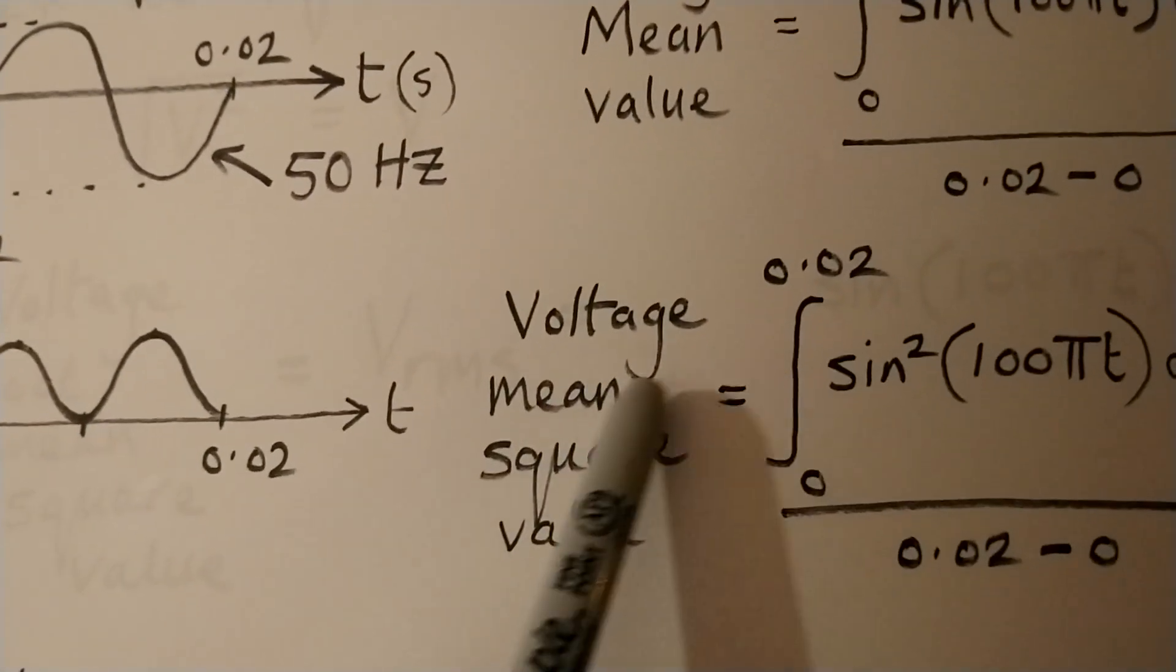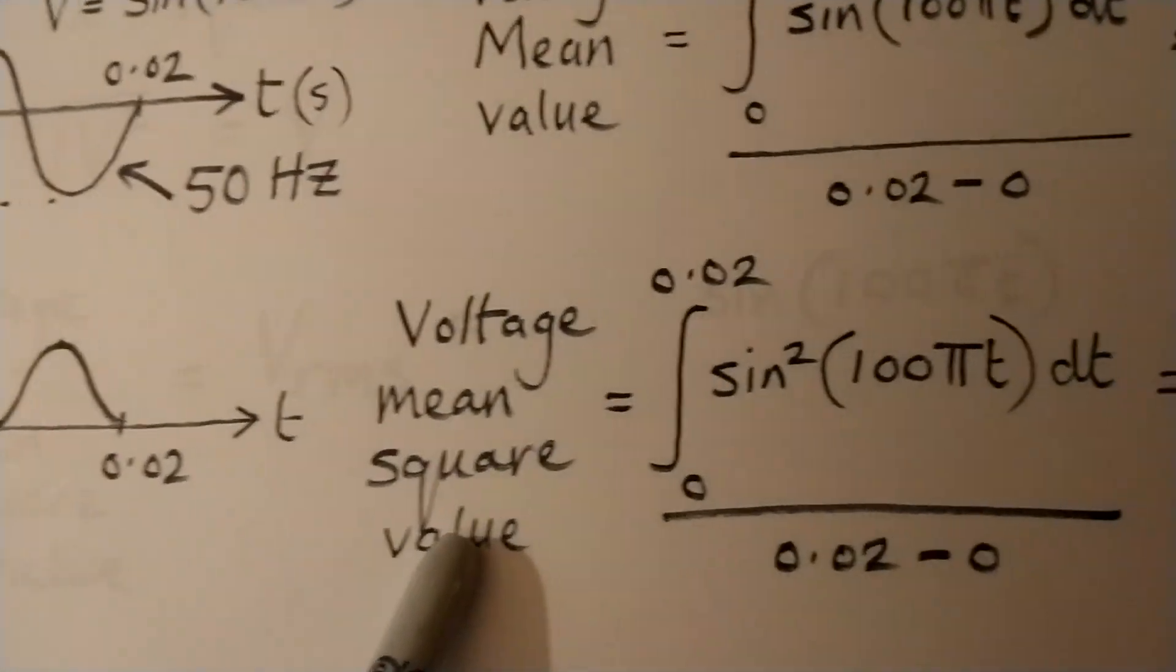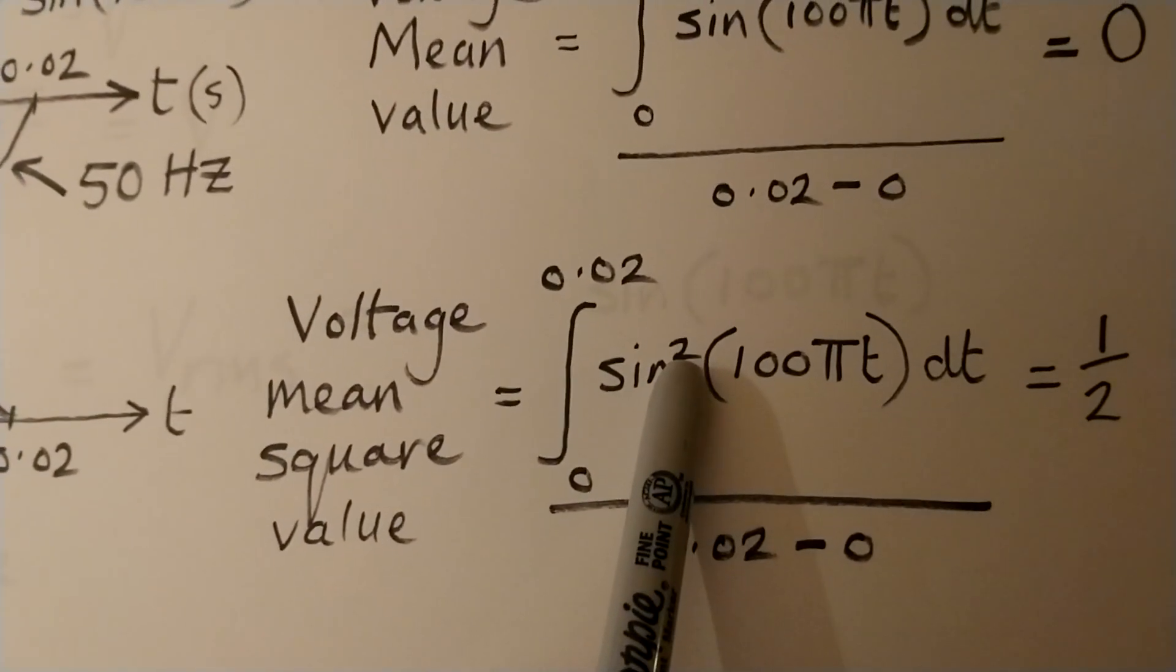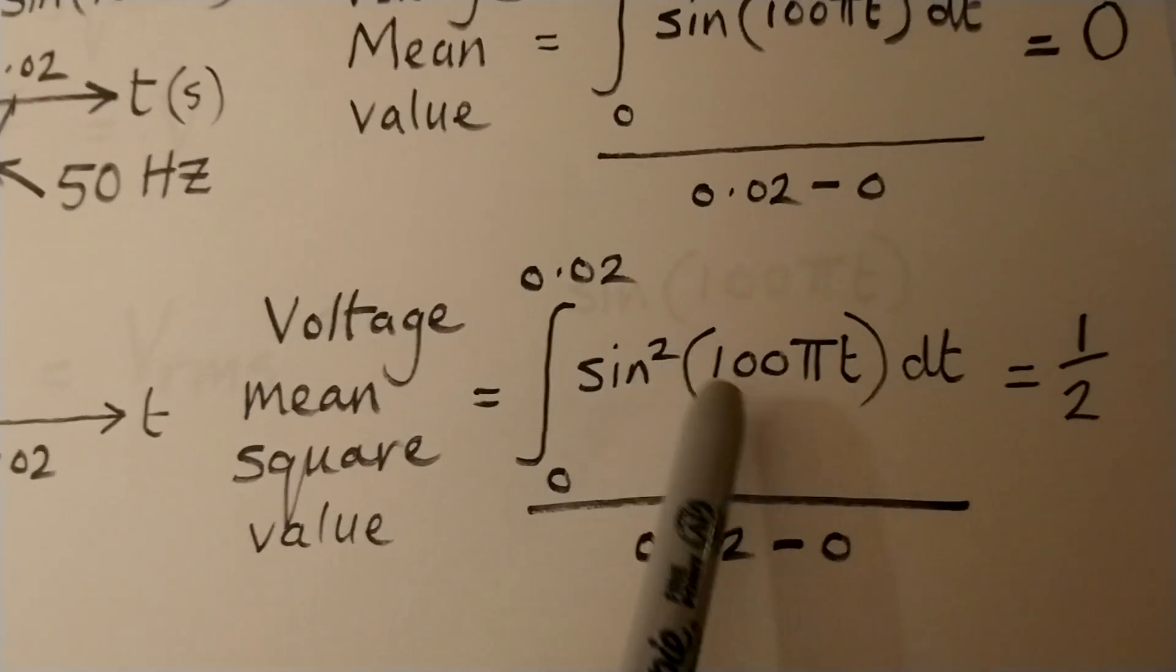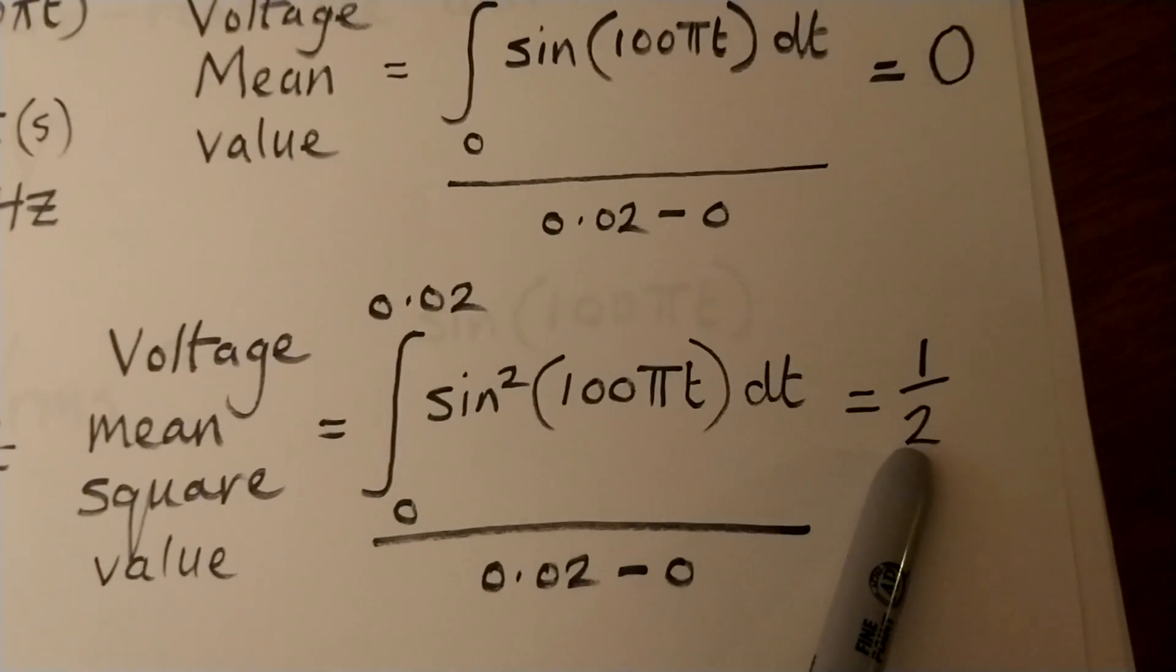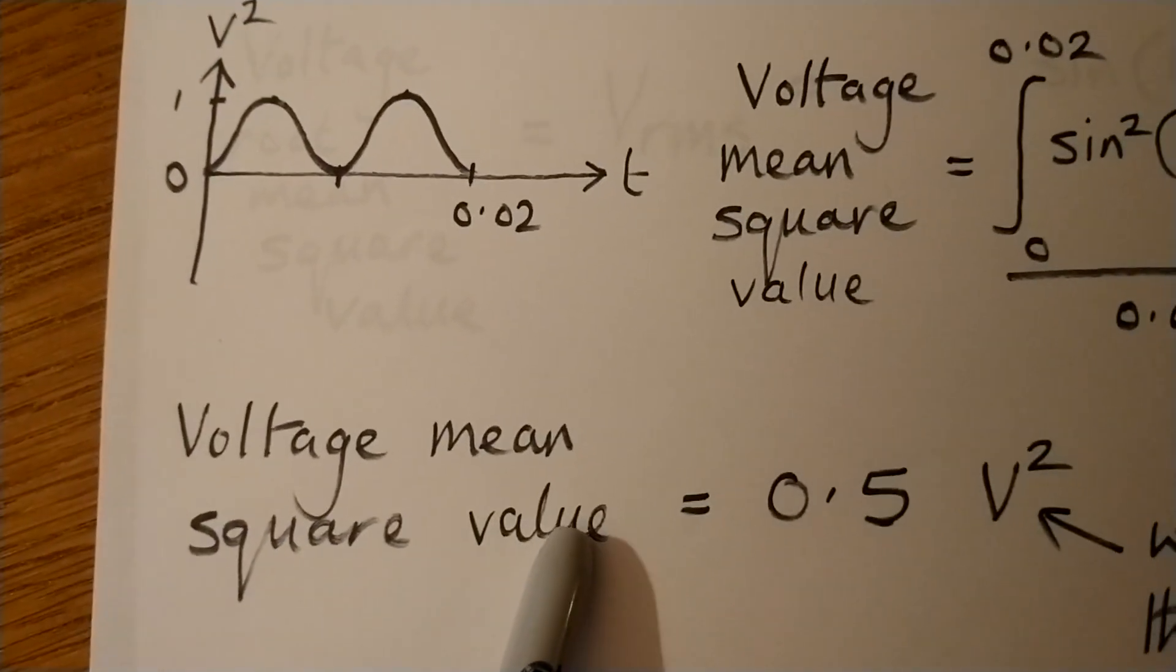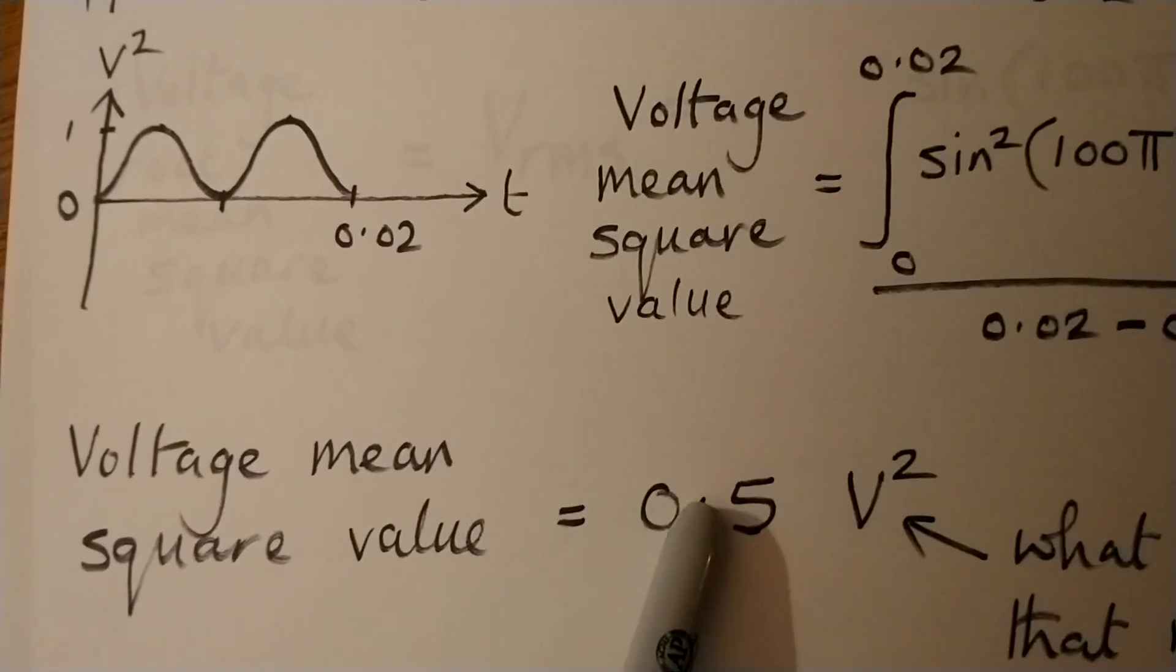And if we work out the voltage mean square value, which is the same technique, but this time we've squared the sine wave, that gives us a value of a half. So what we've just worked out is the voltage mean square value is 0.5.